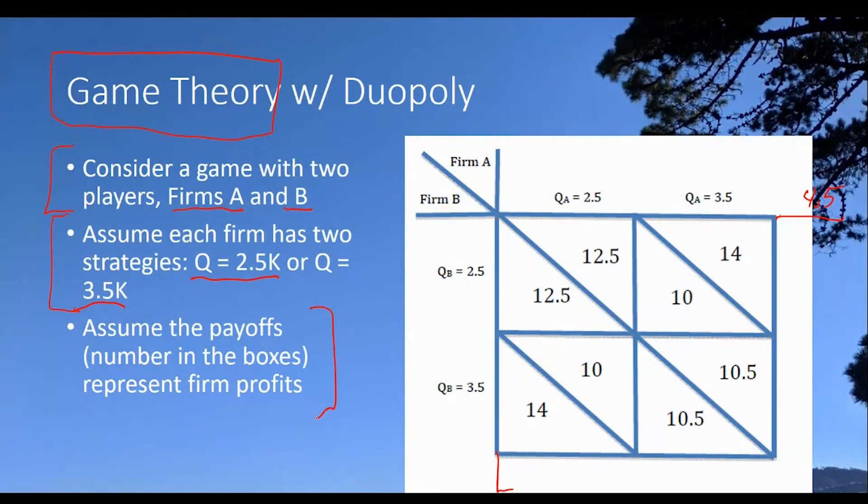Now, lastly, we're going to assume that the payoffs, the numbers in the boxes represent firm profits. And we're going to imagine that the firms care about their profits. That's what they're motivated to do. So what does success in the game mean? It means getting as much profit as you can, making as much money as possible.